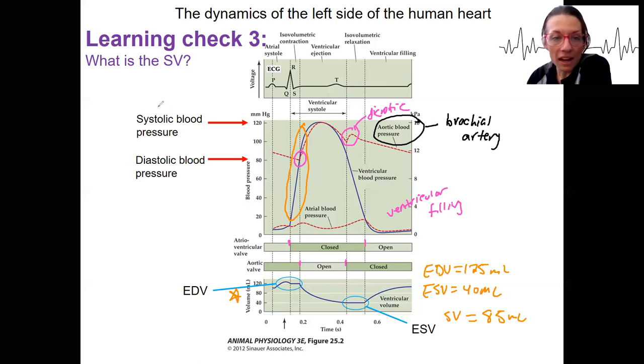Systolic blood pressure, that's the blood pressure during systole. The max blood pressure, pretty much. And then diastolic, that's the blood pressure during relaxation. So that's the minimum at the aorta.